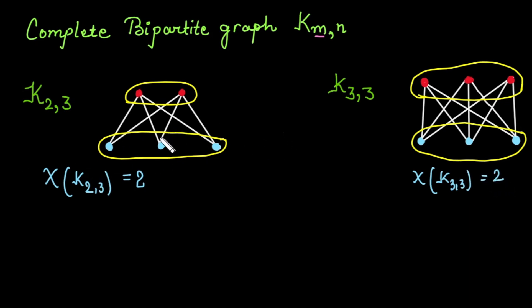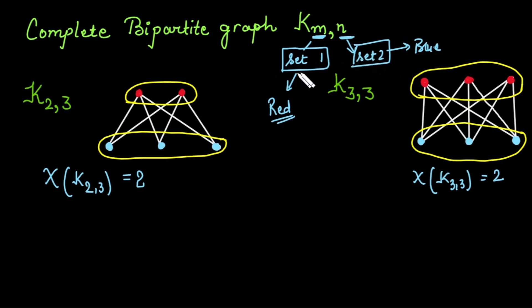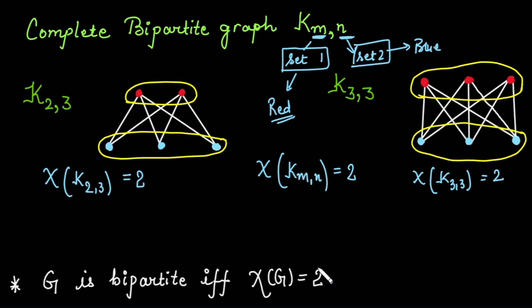From these examples we can observe a pattern: in a complete bipartite graph with m vertices in set 1 and n vertices in set 2, vertices within the same set are never adjacent to each other. So we assign one color to all m vertices in set 1 and a different color to all n vertices in set 2. Total colors used is always 2. Thus the chromatic number of any complete bipartite graph is 2. More generally, if a graph is bipartite, its chromatic number is 2, and conversely if the chromatic number is 2, the graph is bipartite.